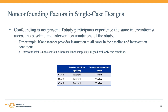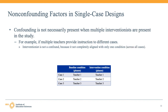In contrast, confounding would not be present if study participants experienced the same interventionist across the baseline and intervention conditions — for example, if one teacher provided instruction to all cases in all conditions. Interventionist would not be considered a confound here because it is not completely aligned with only one condition. Similarly, confounding would not be present if multiple teachers provided instruction to different cases within the design, or if some teachers do or do not provide instruction in different conditions — because in neither case is interventionist completely aligned with only one condition across all cases.